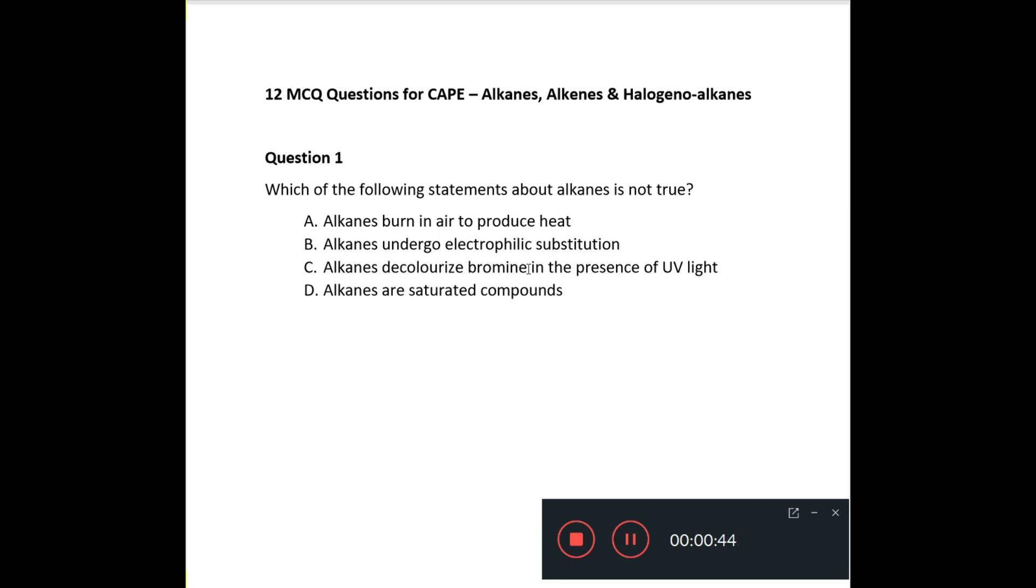Alkanes decolorize bromine in the presence of UV light. This is true. They undergo those halogenation reactions and alkanes are saturated compounds. This is also true. But B says alkanes undergo electrophilic substitution. That is not true. Alkanes actually undergo radical substitution, free radical substitution in the presence of UV light with halogens. So B is your answer.